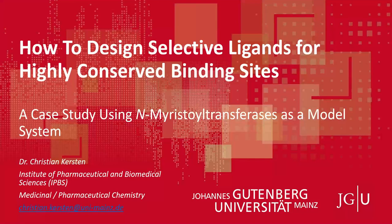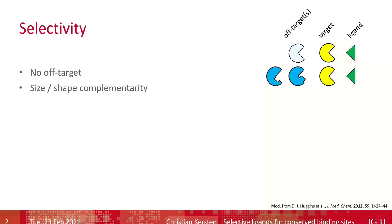Before going into detail with our target, let's have a short look at how we can achieve selectivity in general. In some lucky cases we start off with a target to which our ligand binds and we don't have a structural homolog — that might be the case for some antibiotics — but more often we find off-targets with more or less structural similarity. One of the most obvious things we can exploit is the overall shape or size of the binding site: the off-target may be a little smaller or narrower, causing a steric clash with our ligand.